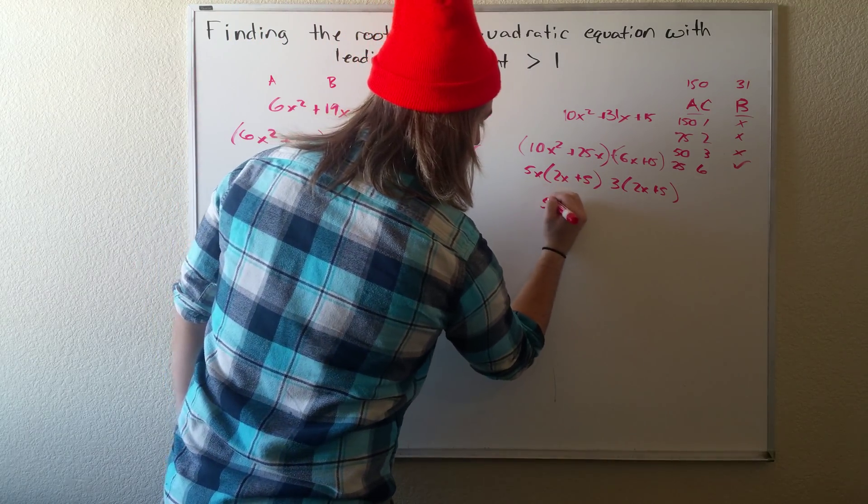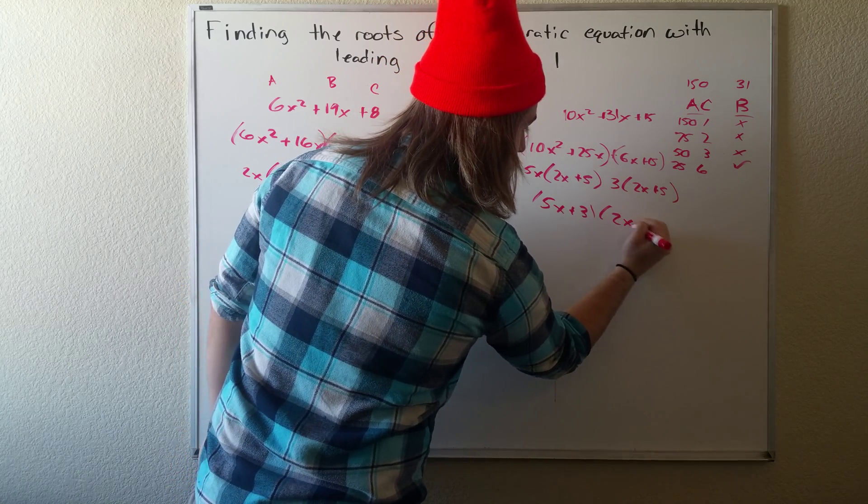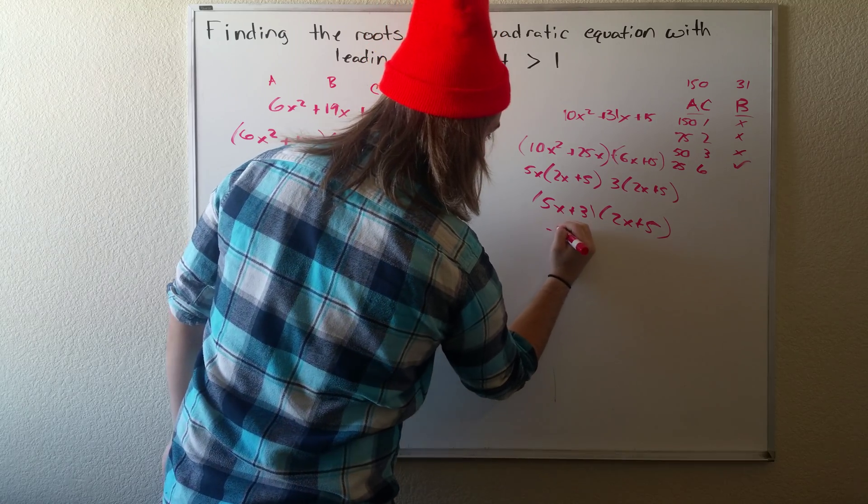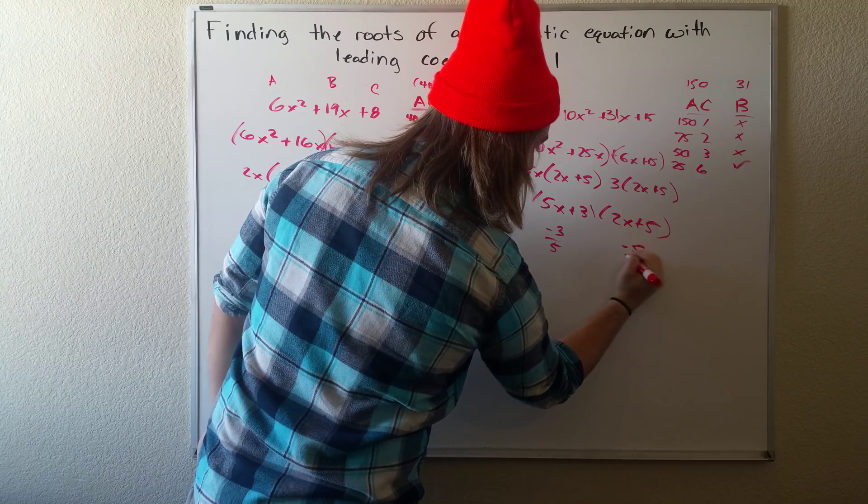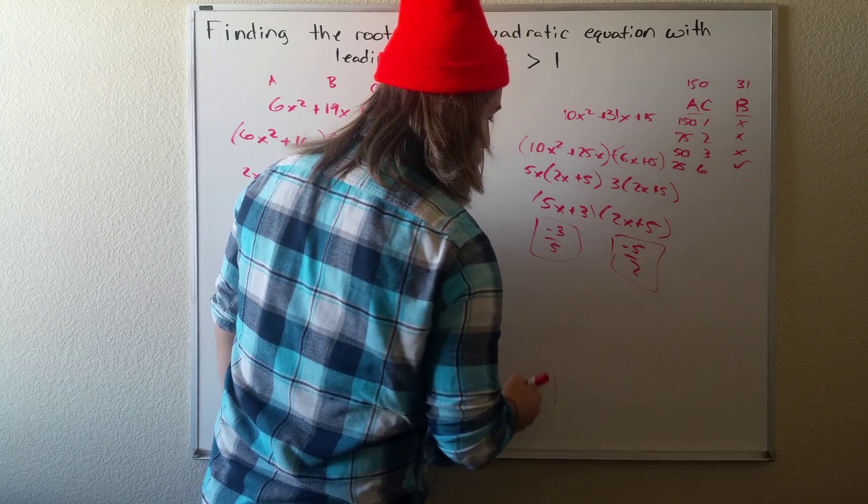Alright. And now we've just combined the coefficients. So we get 5X plus 3 times 2X plus 5. And for this one, the root is negative 3 fifths. For this one, the root is negative 5 over 2. You can go through the math.